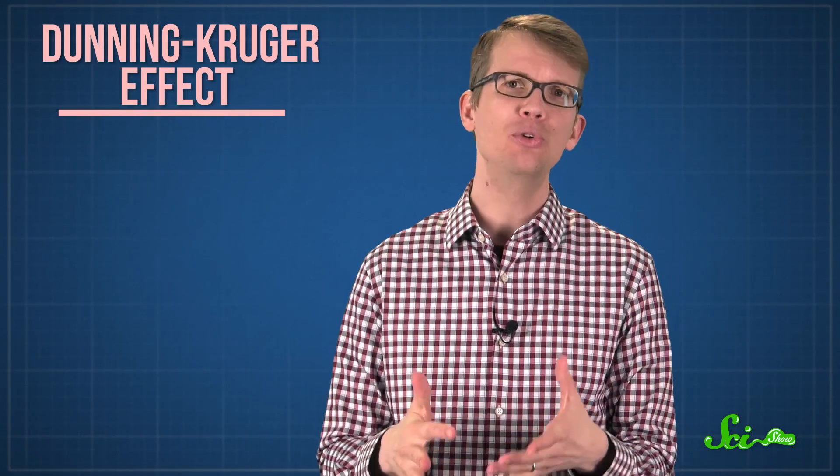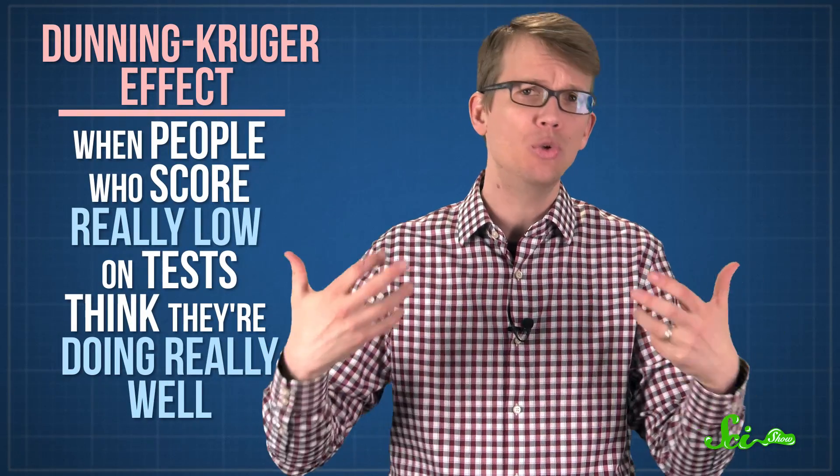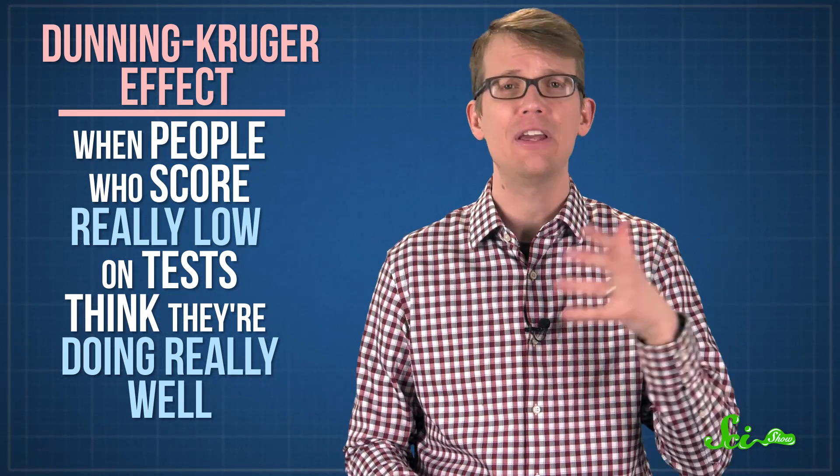This is an example of the Dunning-Kruger effect, when people who score really low on tests of knowledge or ability think that they're actually doing really well. It's something that everyone is susceptible to, since everyone has different areas of knowledge and lack of knowledge.